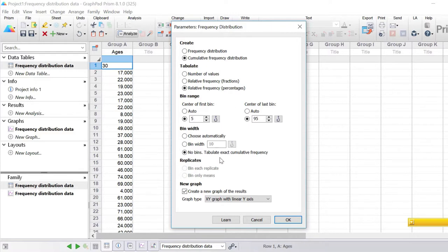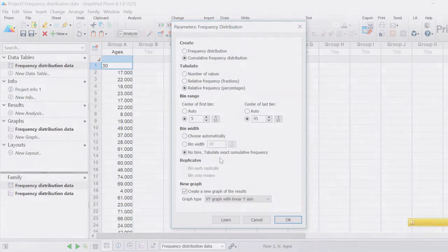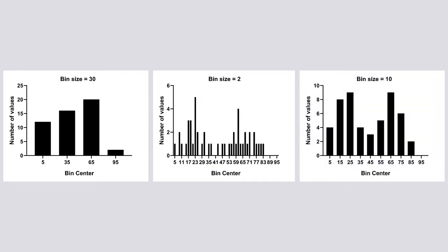The bin width can dramatically change how your frequency distribution looks. Looking at three histograms presenting the exact same data with different bin widths: the histogram on the left uses a bin size of around 30 — too large — resulting in very few bins and no good sense of how values distribute. The middle histogram uses a bin width of 2 — too small — so many bins have only a few values or none at all. The histogram on the right uses an optimal bin size of 10, giving a much better view of the data distribution.